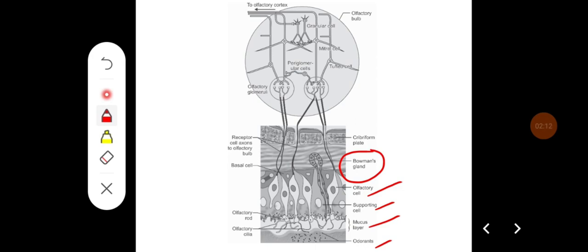Then the axons of these receptor cells pierce through the cribriform plate and they reach the olfactory bulb, which is a part of the cerebral hemisphere, just below the frontal lobe.